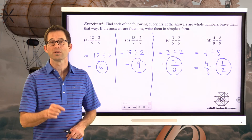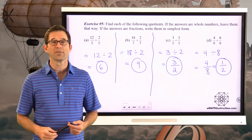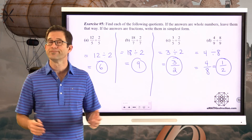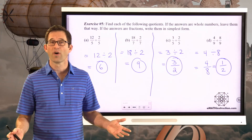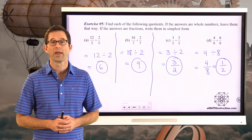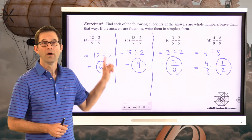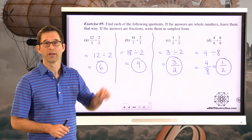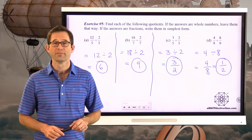If we've got two fractions that have the same denominator, we can find their quotient by simply dividing their numerators.